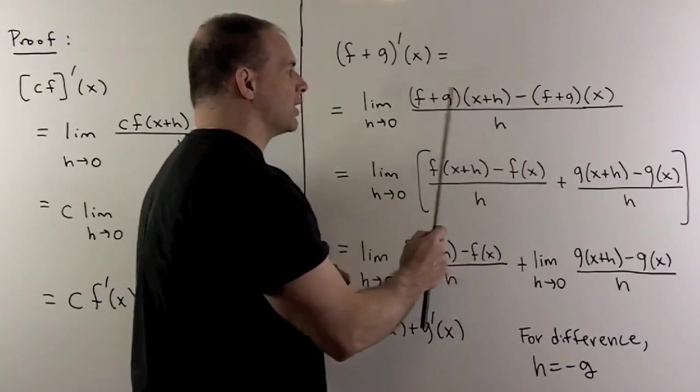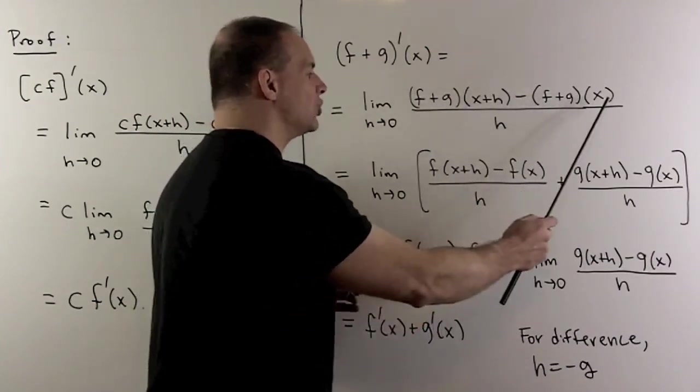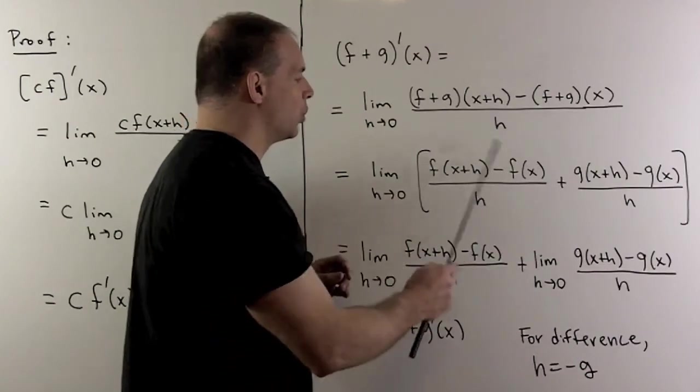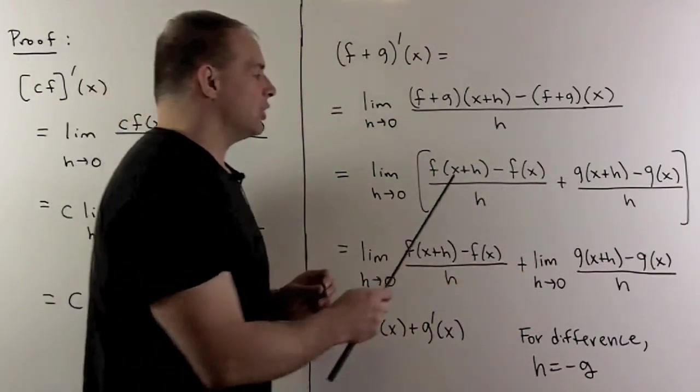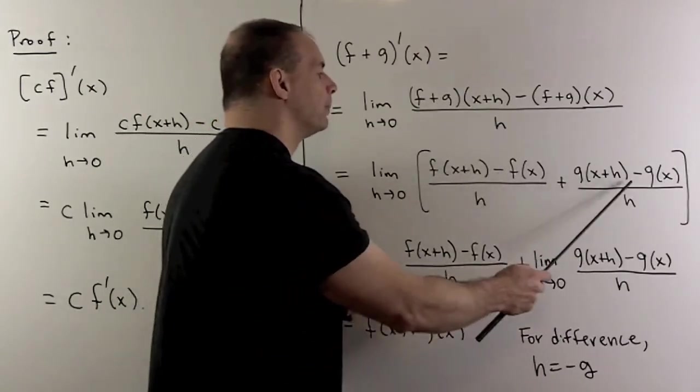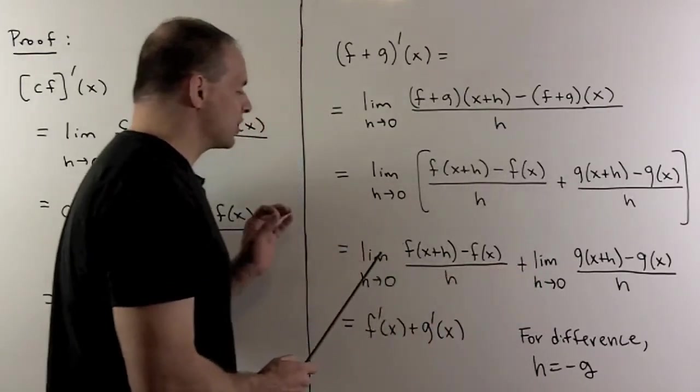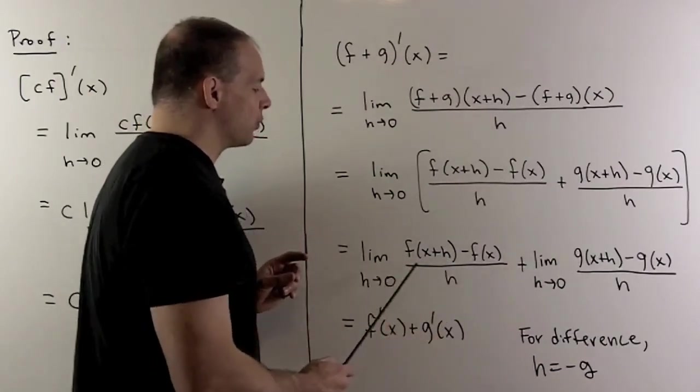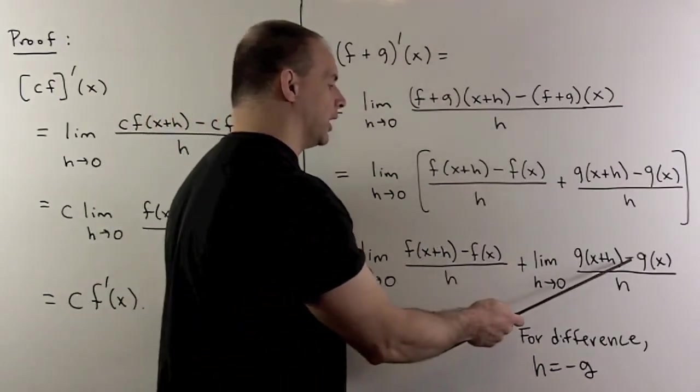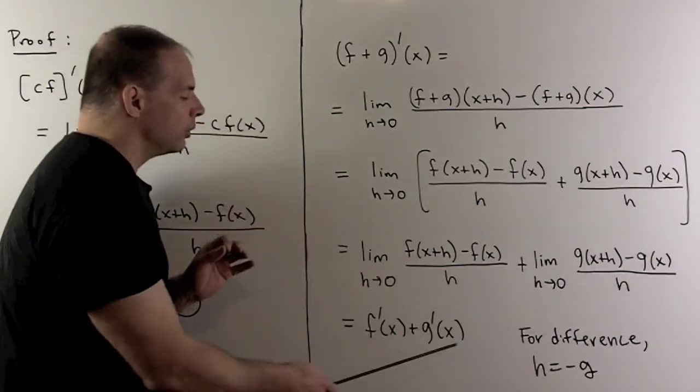So we're not going to split the x plus h. And when we rearrange terms, we're going to have two quotients. Now, if each of these limits exist separately, then I could write this as a sum of two limits. And these are just going to be the definitions for derivative of f, derivative of g. So again, we have our result.